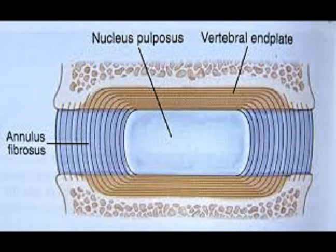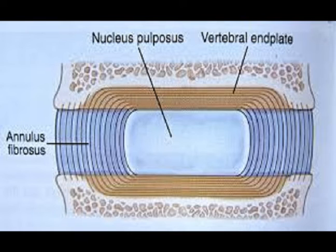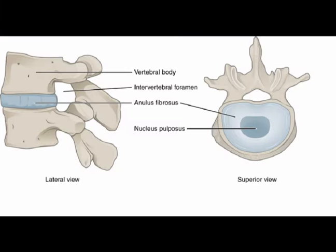The function of the intervertebral disc is that it provides a measure of shock-absorbing protection to the spinal column, and it provides stability for the spine during load-bearing activities. It has three components: the nucleus pulposus, the annulus fibrosus, and the vertebral endplates.